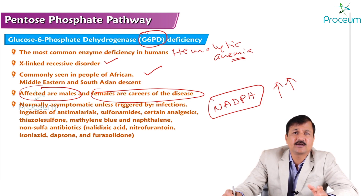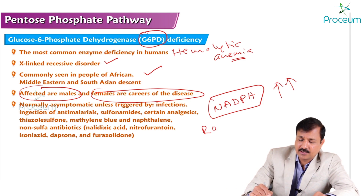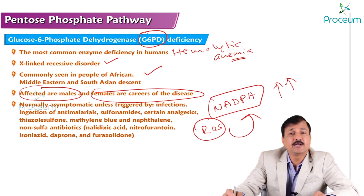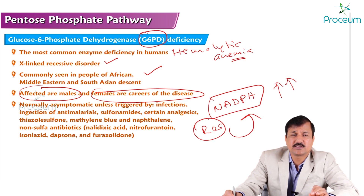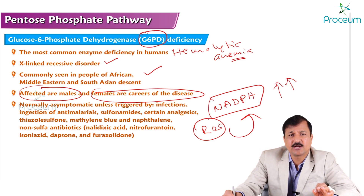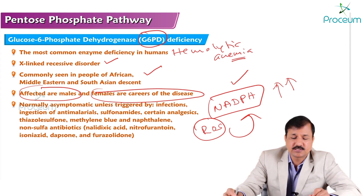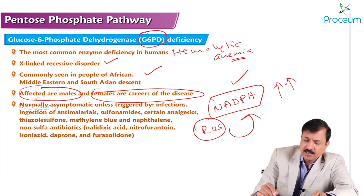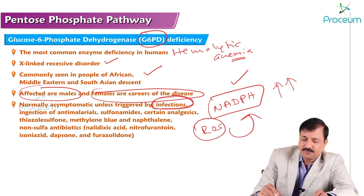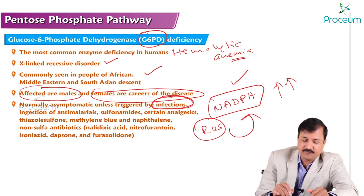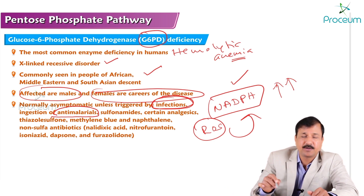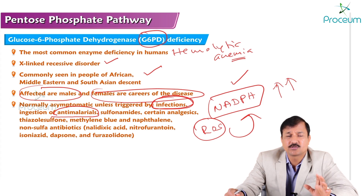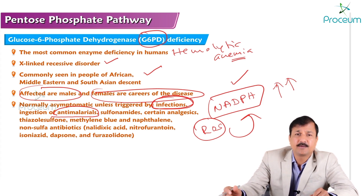Whenever there is an increased demand for NADPH because of triggering events that lead to increased generation of reactive oxygen species, these patients become symptomatic. Triggering events include any infection, or taking anti-malarial drugs like primaquine and pamaquine, which may also trigger the disease making the patient symptomatic.